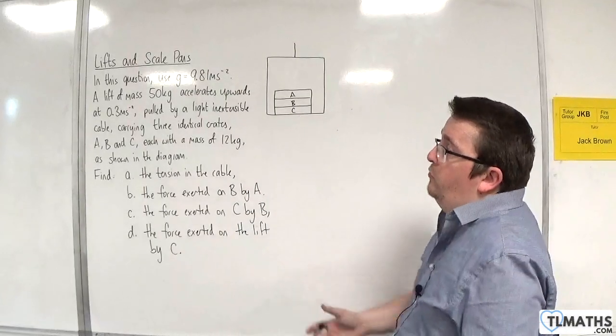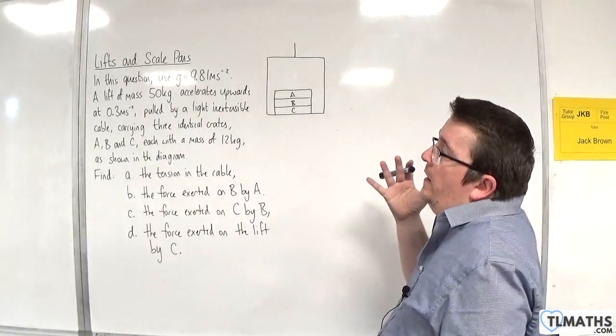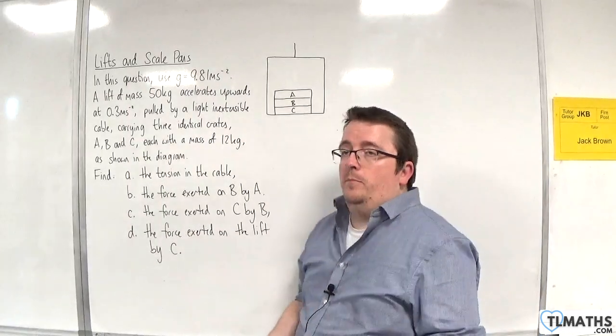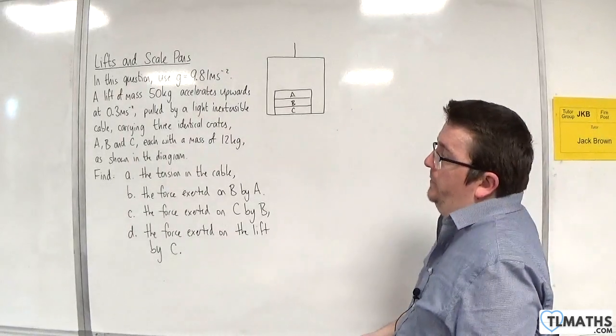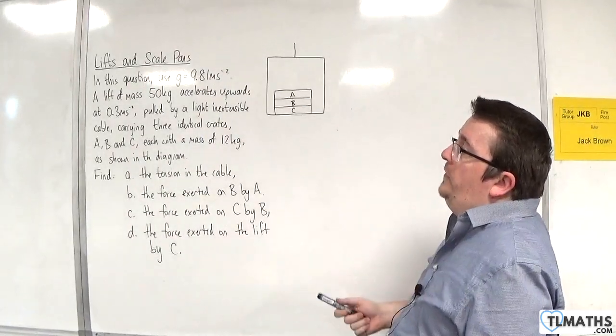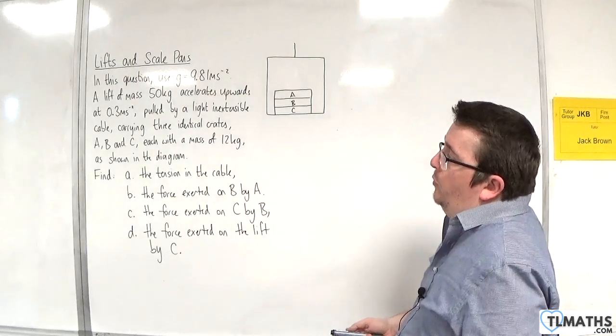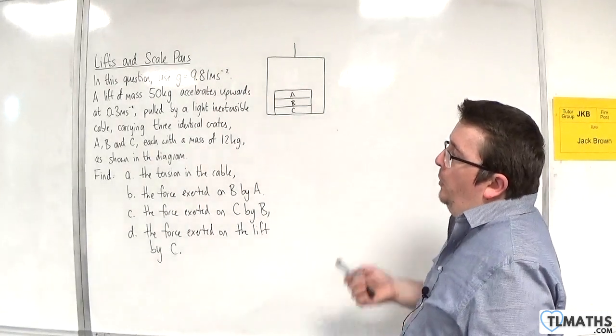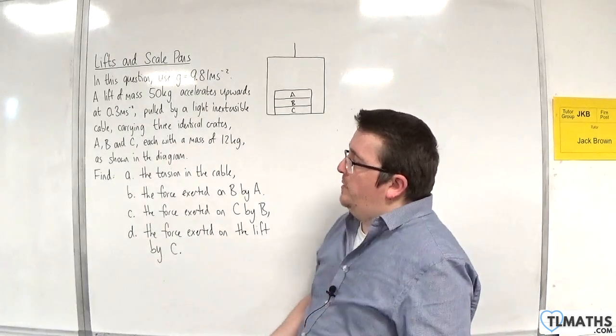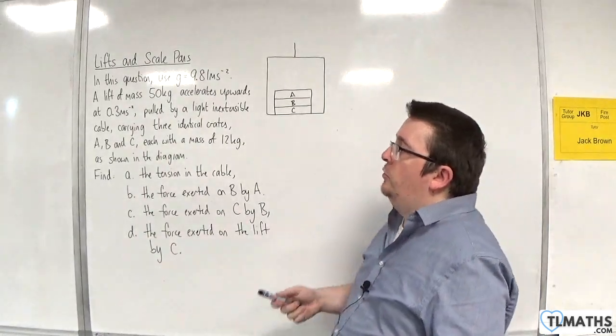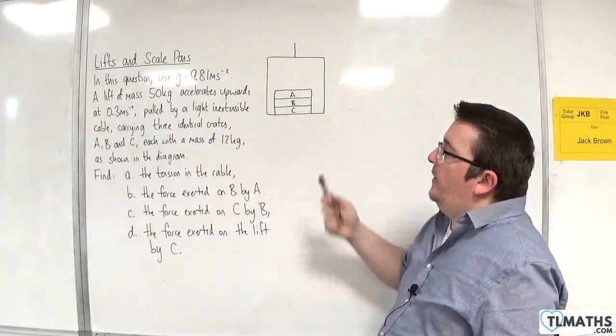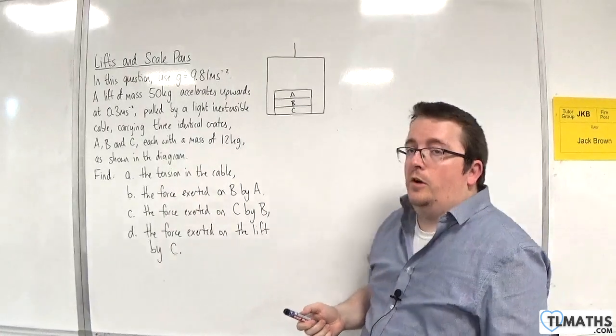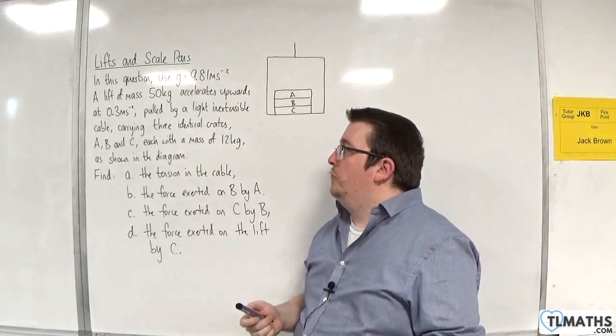In this video, we're going to go through this problem where we are going to be using g as 9.81 metres per second per second. A lift of mass 50 kilos accelerates upwards at 0.3 metres per second per second, pulled by a light inextensible cable, carrying three identical crates A, B, and C, each with a mass of 12 kilos, as shown in the diagram.